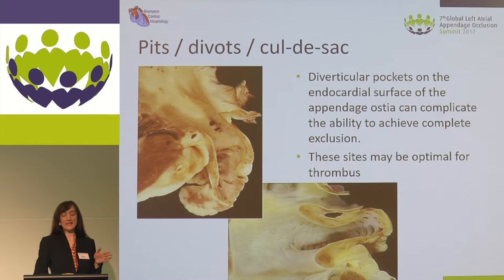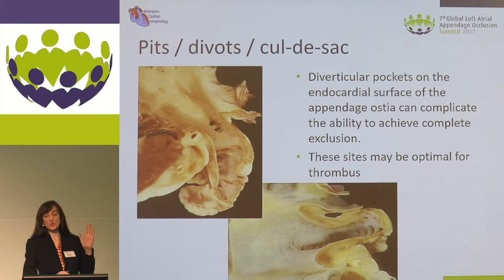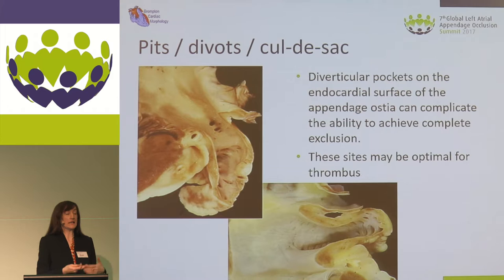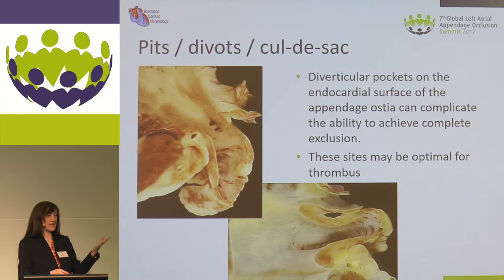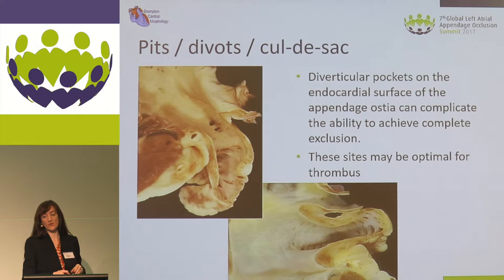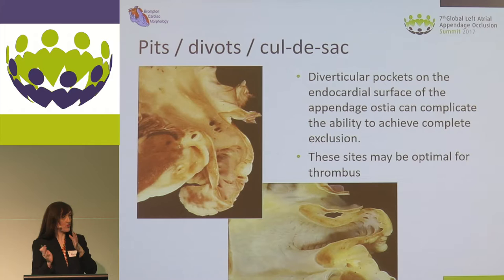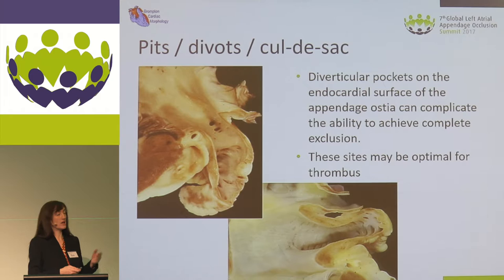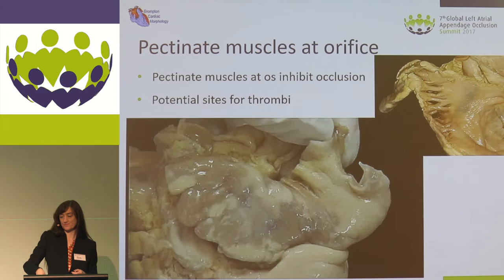What else is key in the deployment of devices? It's the os itself, and it's not always a smooth wall chamber. We do describe the left atrium as a smooth wall chamber, but the body isn't and the appendage isn't. We have very many pits, divots or cul-de-sacs, particularly at the os itself. Very commonly we'll have the pectinate muscles spilling out of the appendage into the main body of the atrium itself. And these pits can be quite deep — again, they might be an optimal site for thrombus formation.